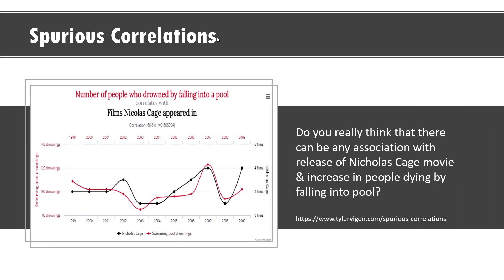Be wary of spurious correlations. This chart from tylervigen.com shows that whenever a Nicolas Cage movie is released, the number of people who drown by falling into a pool also increases. This is clearly a spurious correlation — there is no real causal link. With this example, we come to the end of this session. Take care and have a great day.